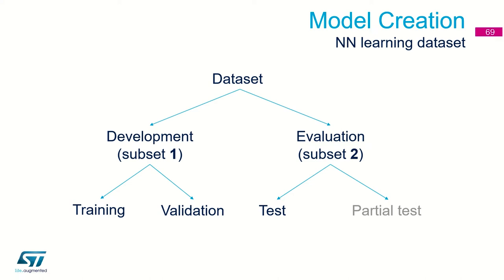Taking a school analogy: the development dataset is the lecture material. After the school period, we have a validation test, but the main feature is that the material is known. The evaluation dataset — subset two — is used for testing the neural network, and its key feature is that it has not been presented to the neural network during training. The evaluation dataset is the equivalent of the final university exam, where the questions should not be known to the student in advance.